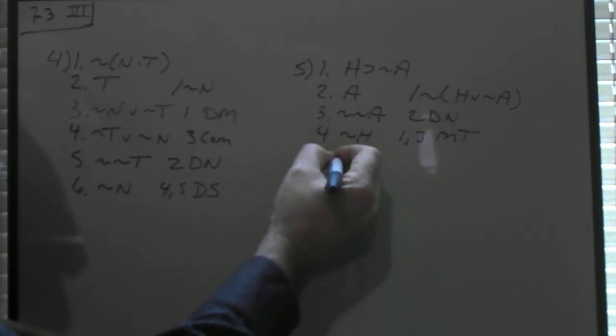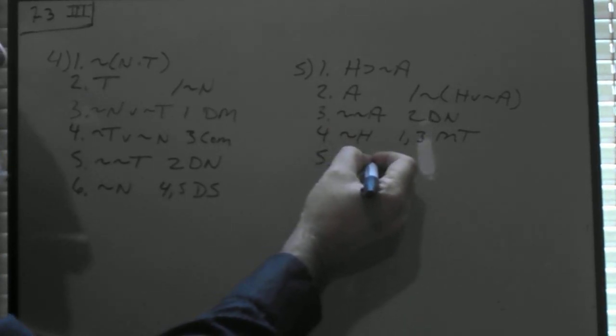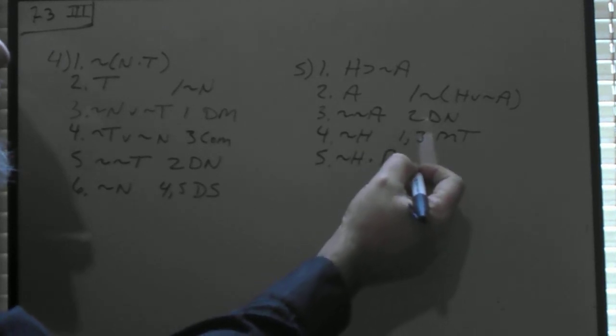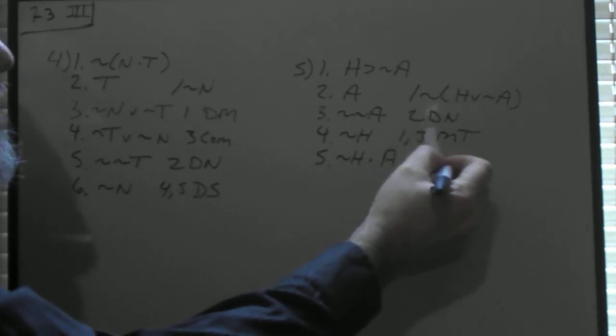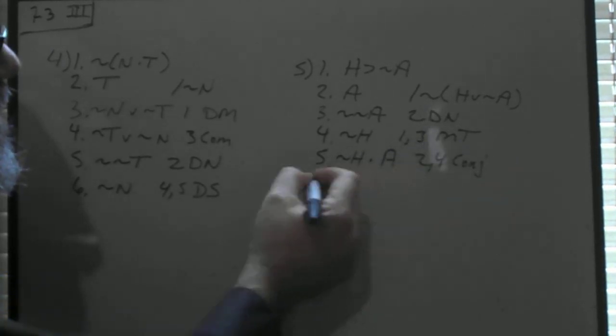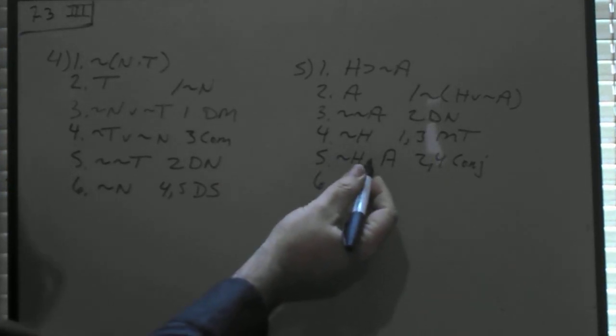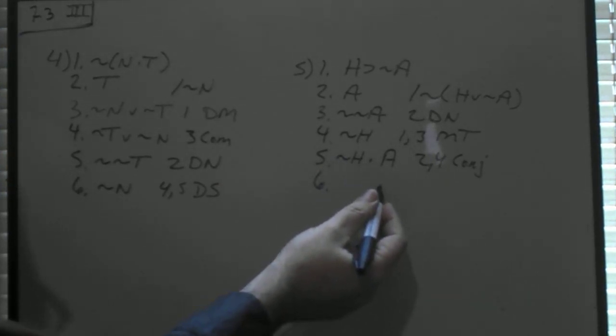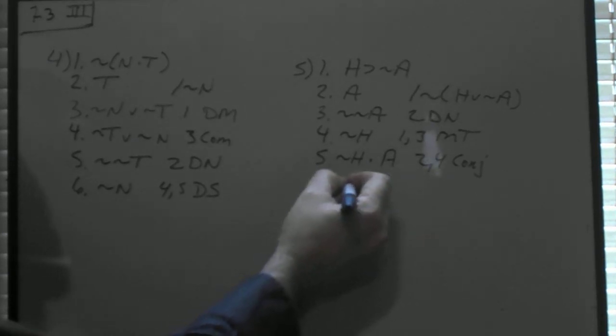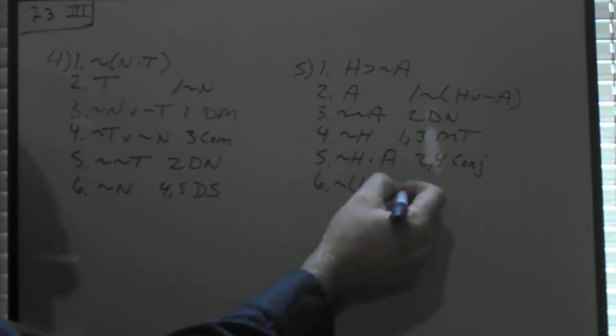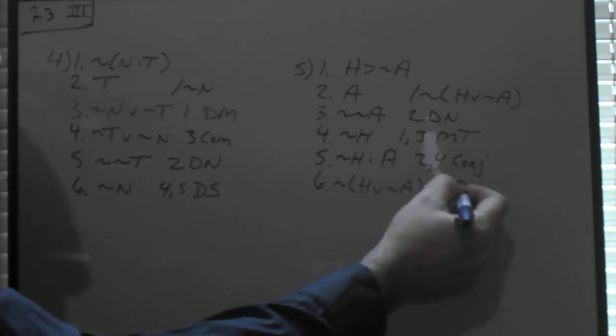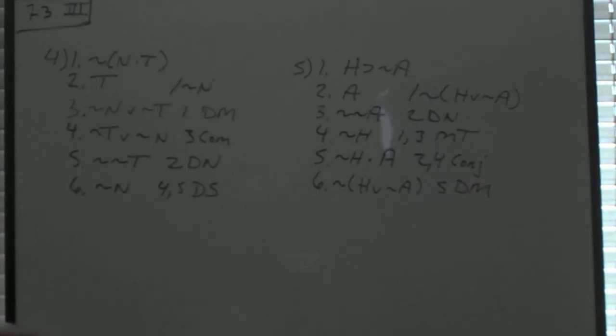Now we can take the not H from line 4 and the A from line 2 through conjunction. And now not H and A using DeMorgan's would give us not H or not A. And that one is proved.